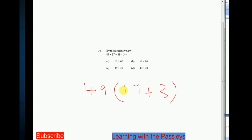So let us work out this problem. A quick way to work out this problem is to add the numbers in the bracket. So 17 plus 3 is 20, right? Times 49. So 49 times 20 is our answer. Hence, D is the answer. Very easy, right? So this is distributive law.